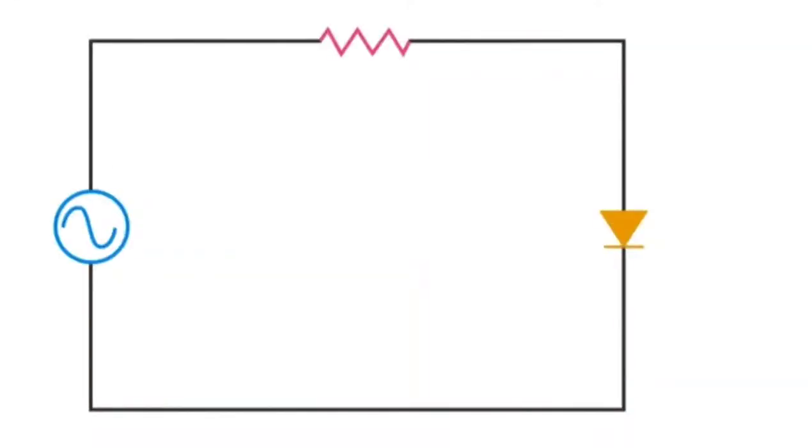A silicon-controlled rectifier, or SCR, is a specialized type of control diode. The electron flow is the same as in an ordinary diode, from cathode to anode.